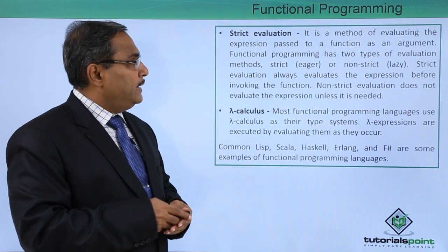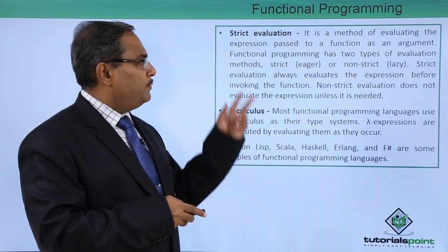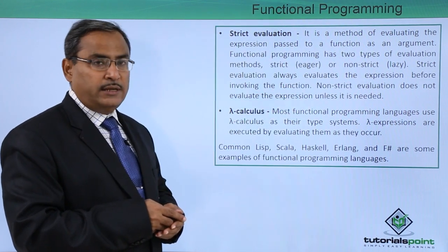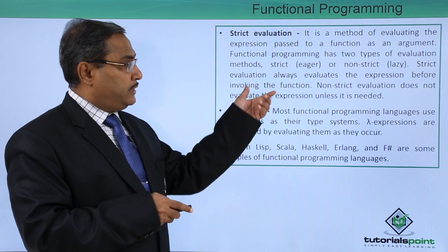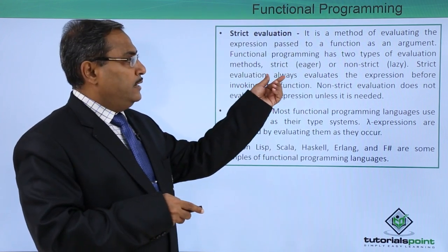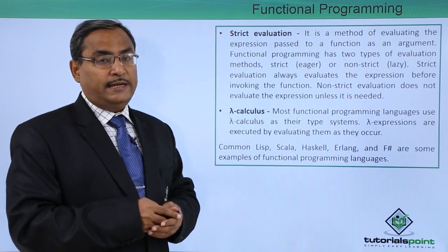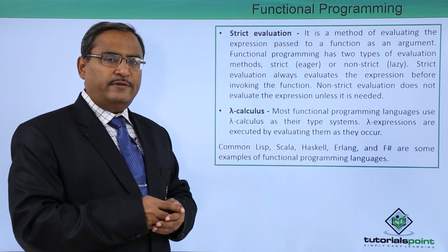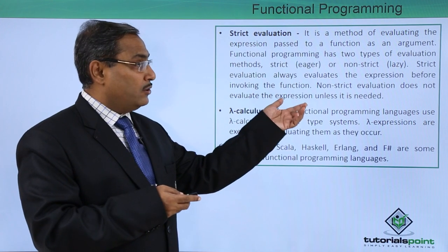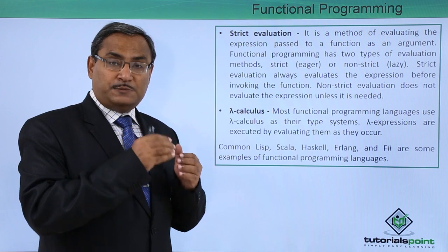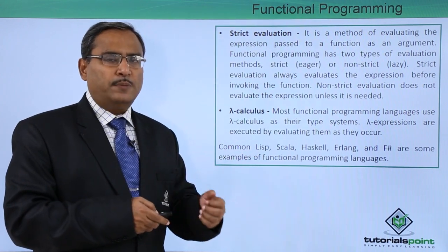Next is strict evaluation — a method of evaluating the expression passed to a function as an argument. Functional programming has two types of evaluation methods: strict (eager) and non-strict (lazy). Strict evaluation always evaluates the expression before invoking the function. In non-strict evaluation, it does not evaluate the expression unless it is needed. When all input arguments are available, strict evaluation calculates the result immediately, whereas in lazy or non-strict evaluation, the expression will not be evaluated even if all inputs are available — it is only evaluated when explicitly asked for.